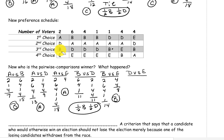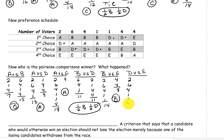And now our final pairing, candidates D and E. Candidate D is above E on the first two. D is above E on the six, on the four, on the one. D is also above E on this one. D is above E on the four, and the last four go to E. Candidate D has a total of 18 while E only has four, so D wins this pairing.